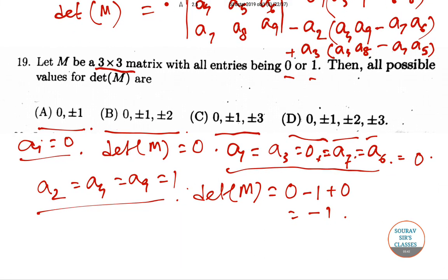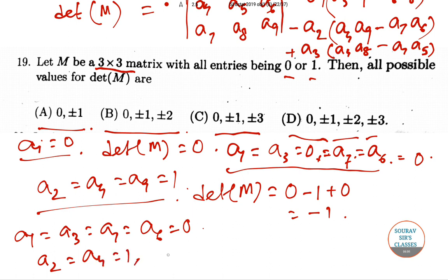In the same way, if we get a1 equal to a3 equal to a7 equal to a6 equal to 0, and a2 equal to a4 equal to 1, and a9 equal to 0, then det M is also 0.